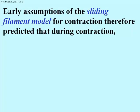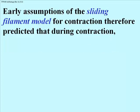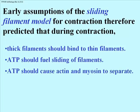Early assumptions from a sliding filament model for contraction — a model in which shortening of sarcomeres is presumed to be due to actin sliding against myosin — would lead to some predictions. Specifically, during contraction, thick and thin filaments should bind to one another; that makes sense if sliding is used to pull the Z-lines closer. You would model the role of ATP in fueling the sliding, since contraction is a form of motility requiring free energy. And given the paradox, you would also have to include in your model that ATP should cause actin and myosin to come apart.